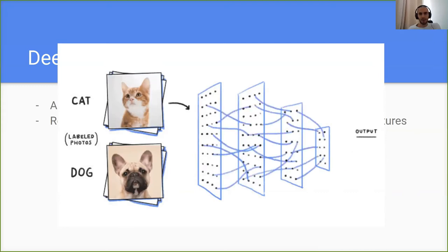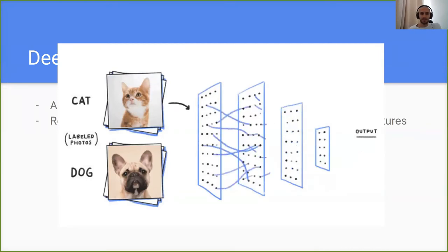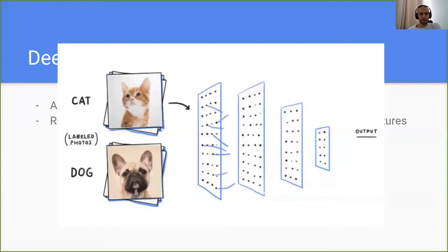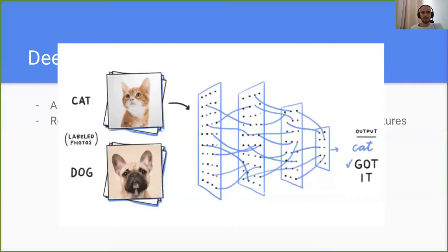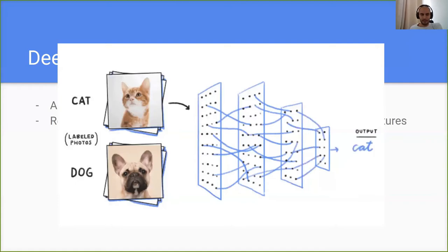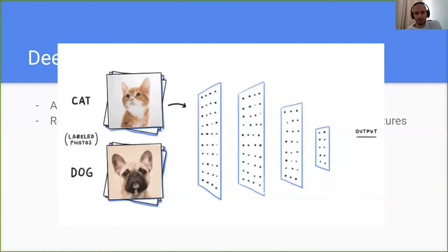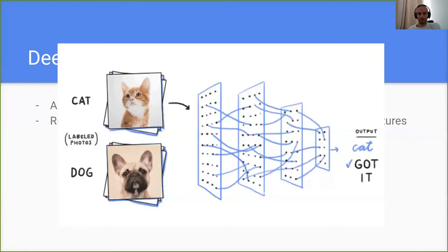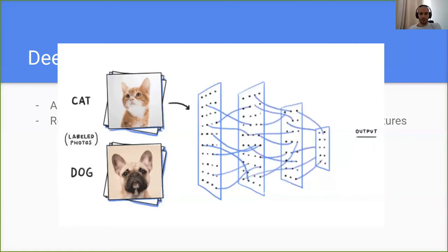It does both things: feature extraction and decision-making — two in one. This is why neural networks are really popular nowadays for classification algorithms. The same applies for spectrograms as well. Instead of taking a cat image, we can use a spectrogram of a whale call and a spectrogram of background noise, and teach the model to differentiate between them.